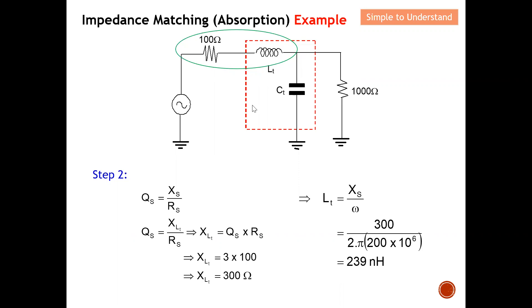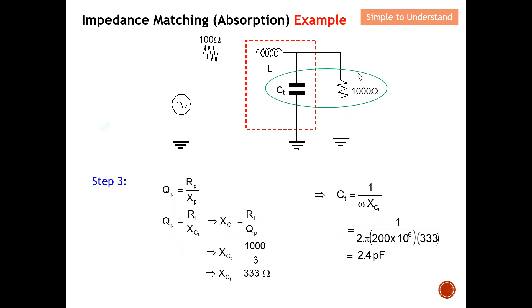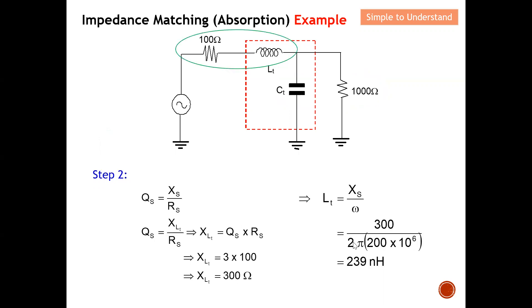Next, focusing on the parallel portion: the parallel Q governs the capacitor calculation. Rearranging the parallel Q formula, XC equals the parallel resistor (1000 ohm) divided by Q_P (which equals 3), giving XC equal to 333 ohm. Using XC equals 1 over omega times C, I rearrange and calculate the total capacitor value as 2.4 picofarad.